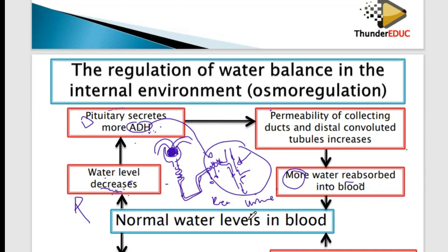More water is reabsorbed back to the blood, and then once more water is reabsorbed the water level increases. That's why if you started with a decrease, the last statement must be increase. More water is reabsorbed back to the blood — in other words, you're going to produce more concentrated, yellowish urine. Less water is lost through urine and more salts are lost as urine.